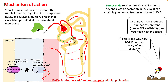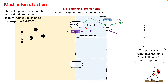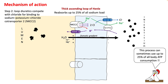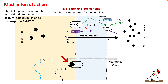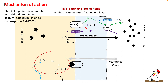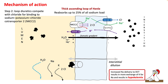Once secreted in the proximal convoluted tubule, the loop diuretic travels to the thick ascending loop of Henle where it blocks your sodium-potassium-2-chloride (NKCC2) channel. This channel is important in reabsorption of sodium — it absorbs up to 25 percent of all sodium load — and this results in an osmotic gradient in the interstitium versus lumen, which is very important for water reabsorption. This channel also results in an electrochemical gradient aiding absorption of calcium and magnesium. Blocking it causes interstitial dilution, and increased sodium delivery to the distal convoluted tubule results in more sodium-potassium exchange, causing hypokalemia.